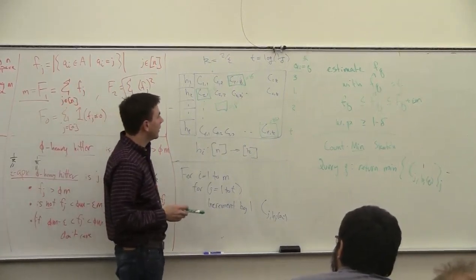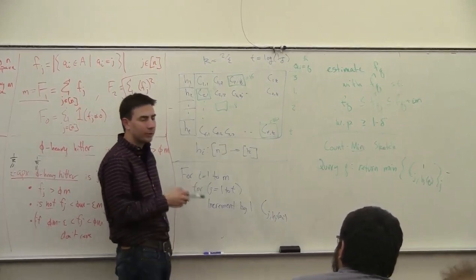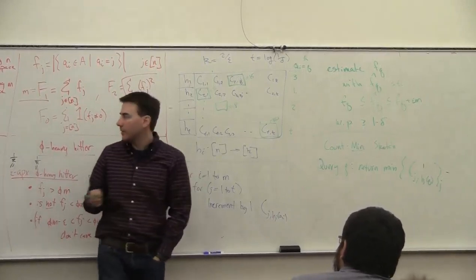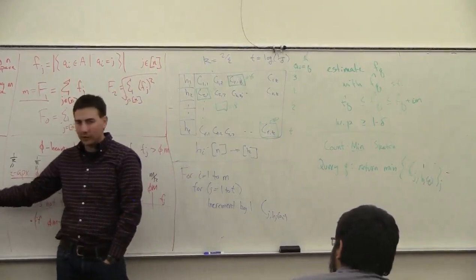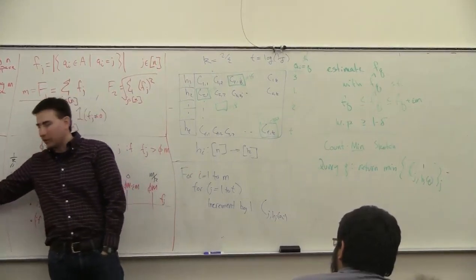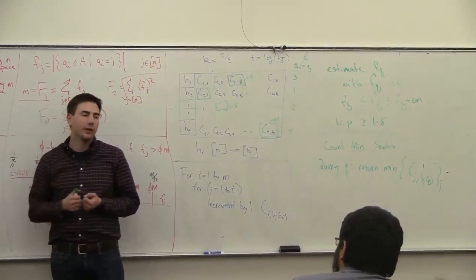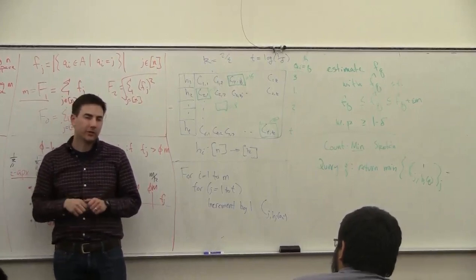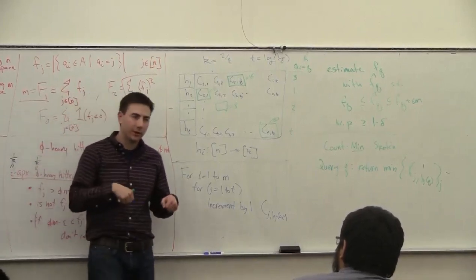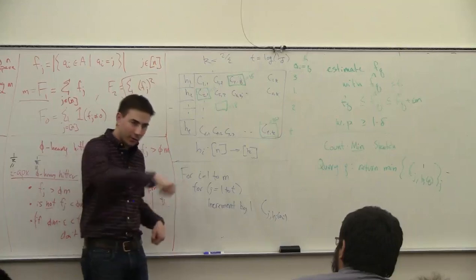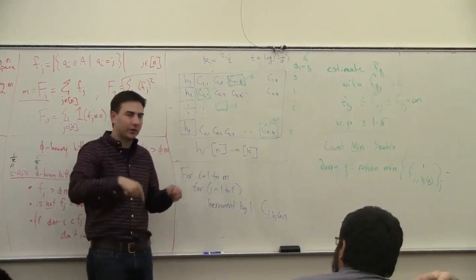And you can also subtract things from the stream. Maybe you had some value and instead of having a new thing, you said one of the things I saw is now gone. This is known as the turnstile model. Like if you're going to a football game, you have to walk through one of those gates—those are called turnstiles.